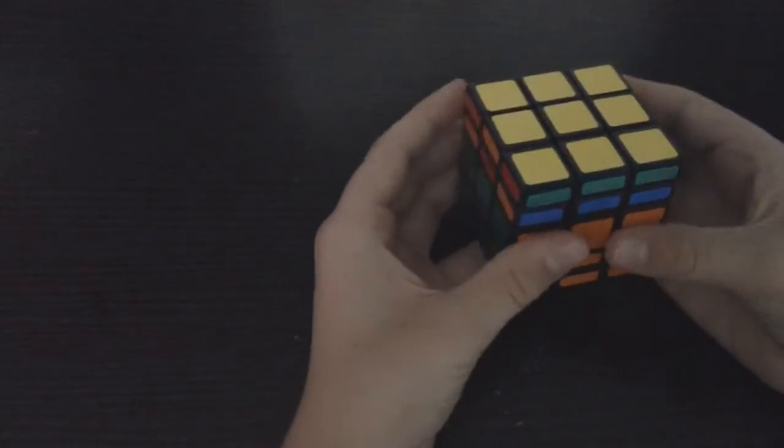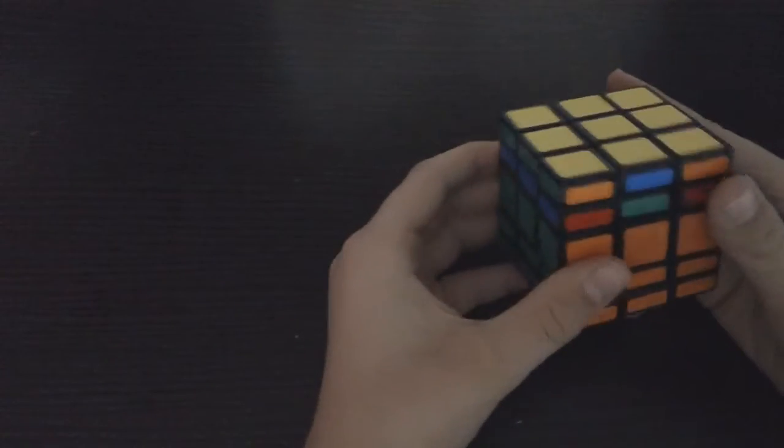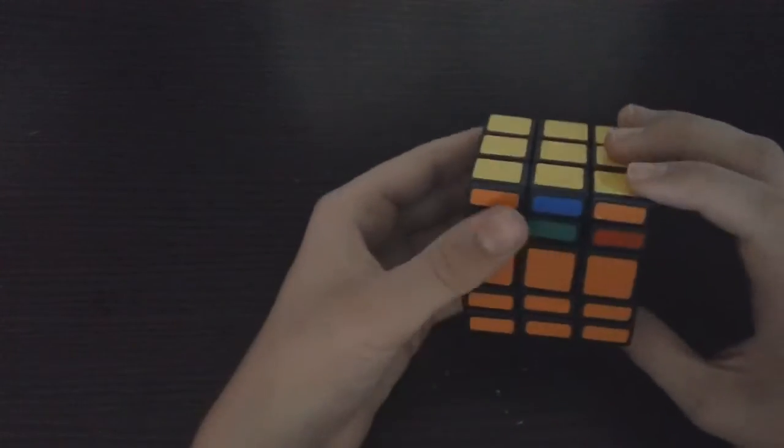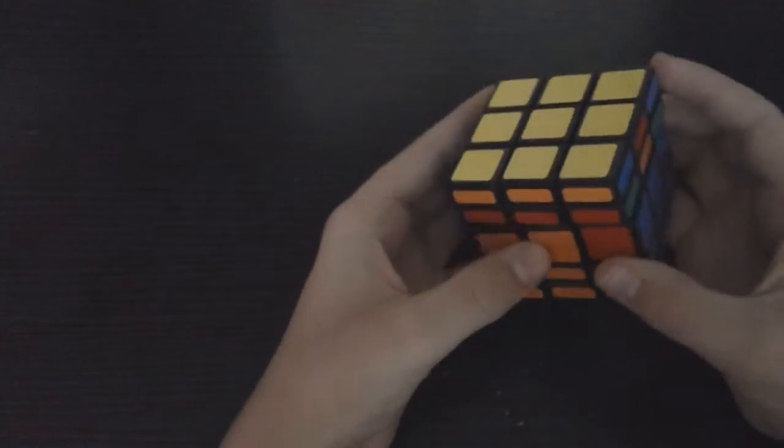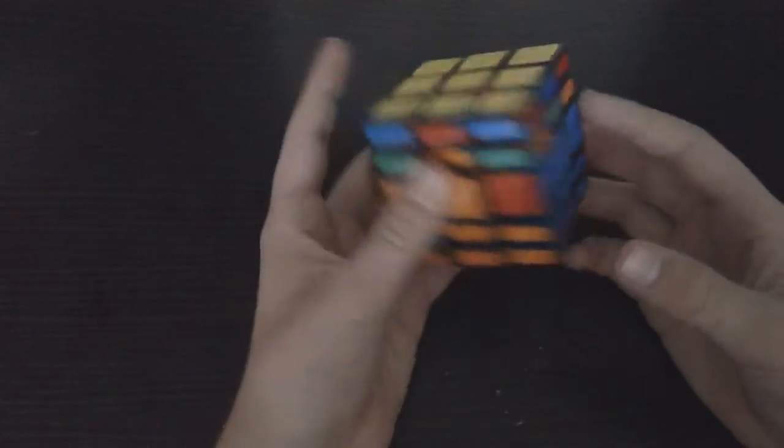And now what we're going to do is the algorithm to switch to a cross. Now this algorithm is even easier. This is the algorithm: R2, U2, R2, U2, R2, U2. That's all of this. You do it times three.